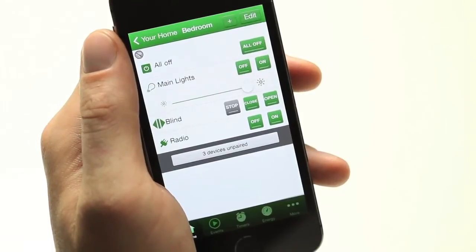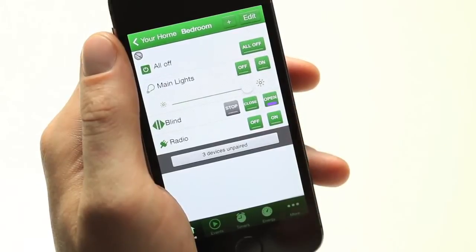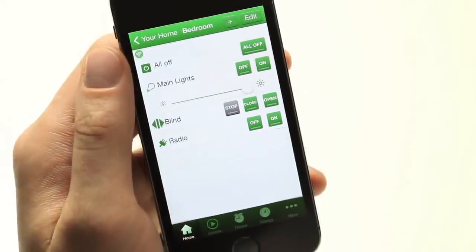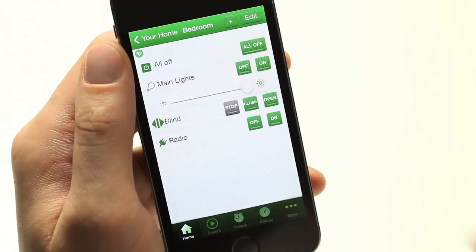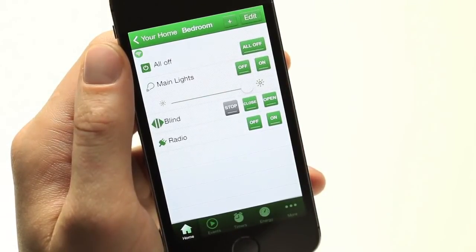When operated by the smartphone app, the left-hand load terminal will be connected when the open button is pressed. The right-hand load terminal will be connected when the close button is pressed. Both terminals will be disconnected when the stop button is pressed.